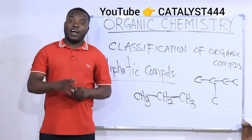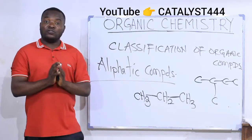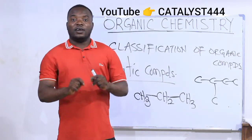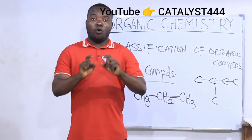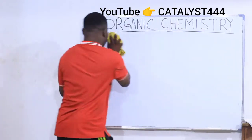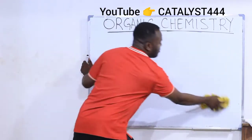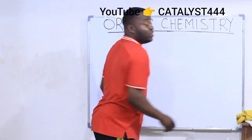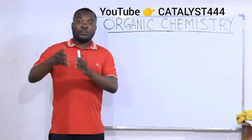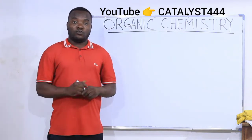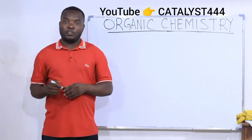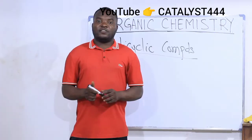We say that aliphatic compounds are those organic compounds that have open chain structures. Remember, another name for aliphatic compounds is the open chain compounds — so if you don't call them aliphatics, you call them open chain.